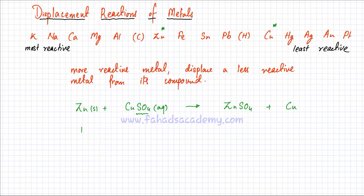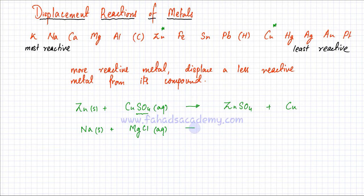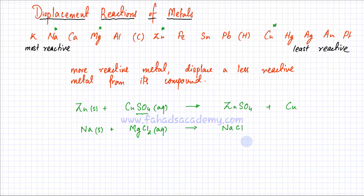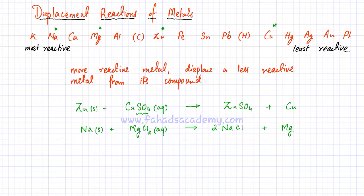Let's do another reaction. I have sodium reacting with MgCl2 — magnesium chloride in aqueous state, and sodium is a solid metal. Sodium is going to displace magnesium because sodium is more reactive than magnesium. What forms is sodium chloride, NaCl, because Na is +1 and Cl is -1. MgCl2 has Mg as 2+ and Cl as -1. I need to balance the equation: there are two chlorines on the left, so two chlorines on the right, meaning two sodiums are needed on the left as well.